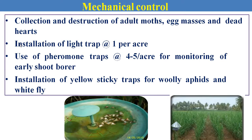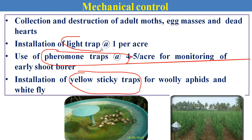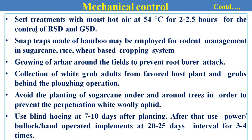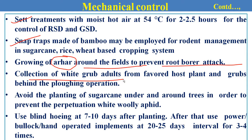For mechanical control, we can use different traps: yellow sticky traps for different sucking pest populations, pheromone traps for lepidopteran insects, and light traps for nocturnal insects. We can also collect different egg masses and dead hearts, as there are hibernating life stages of the insect present in them. Other mechanical practices include safe treatment with moist air, snap traps made of bamboo to reduce pest infestation, and using arhar or tur as a barrier crop around the field to prevent infestation of root and stock borers. We can also collect white grub adults from adult host trees around the field, shake the trees, collect the beetles, and destroy them. Avoid planting sugarcane under and around trees to prevent proliferation of woolly aphids.